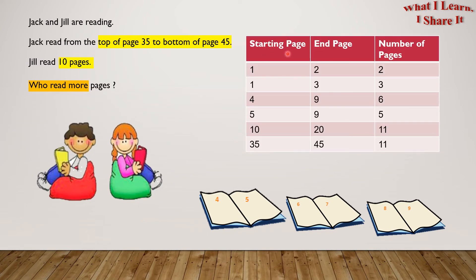Let's see this chart to make it more clear. If my start page was 1 and the end page was 2, the number of pages I would have read were 2. If my start page was 1 and the end page was 3, the number of pages are 1, 2, and 3.